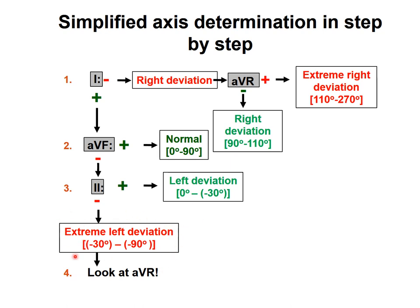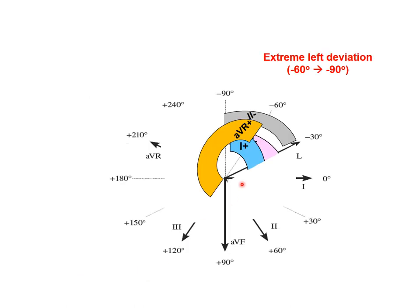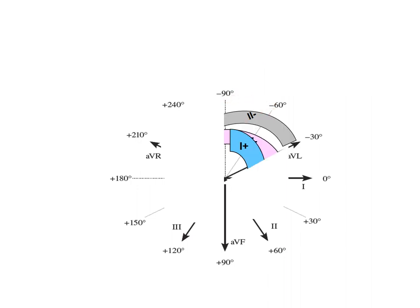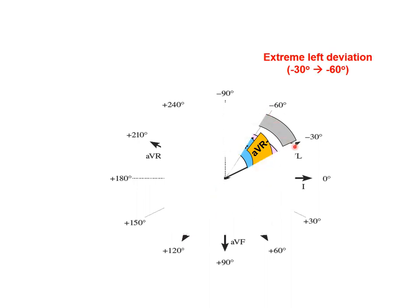If we know that lead 1 is positive, AVF is negative, and lead number 2 is negative, we have extreme left deviation ranging from minus 30 to minus 90. To narrow this down further, look at AVR. If AVR is positive, the axis ranges from minus 60 to minus 90. If AVR is negative, the axis ranges between minus 30 and minus 60.